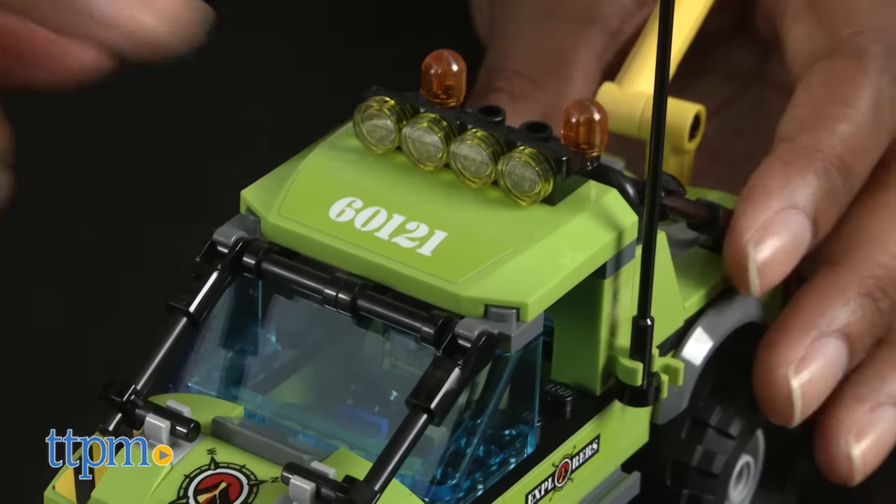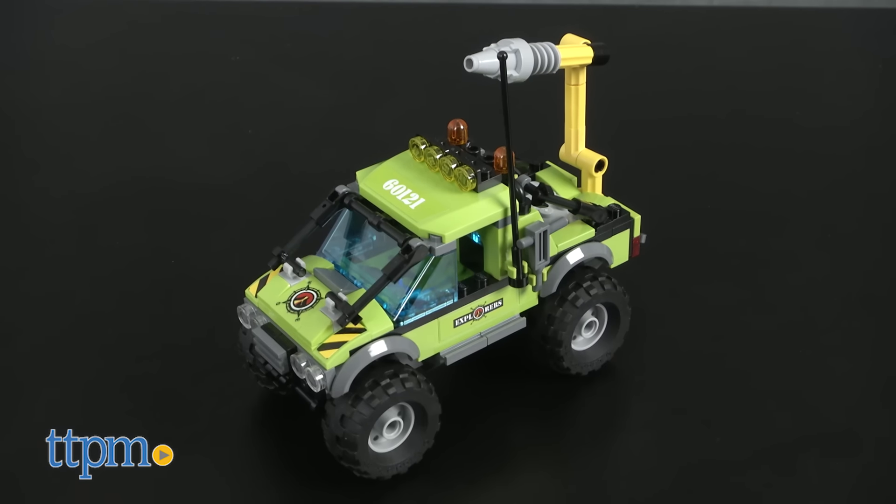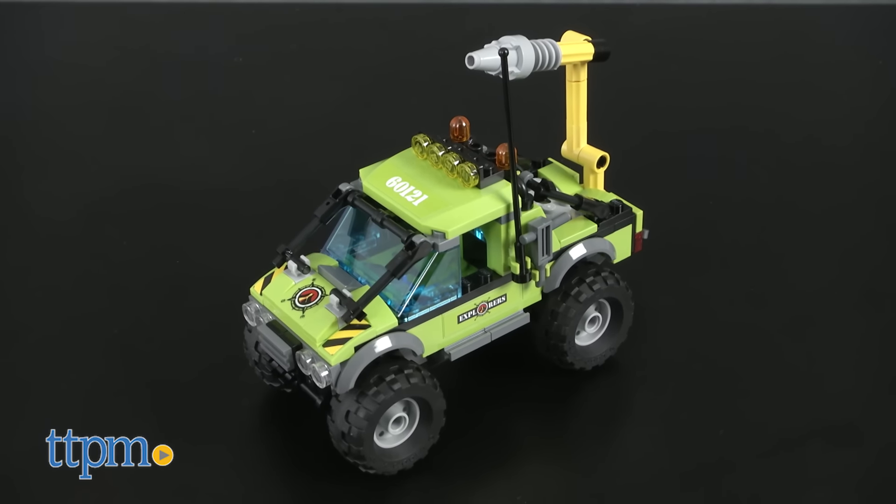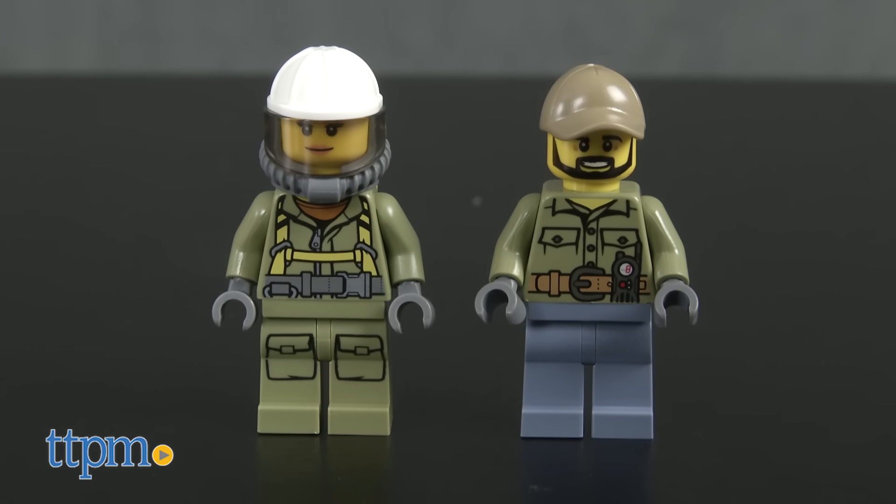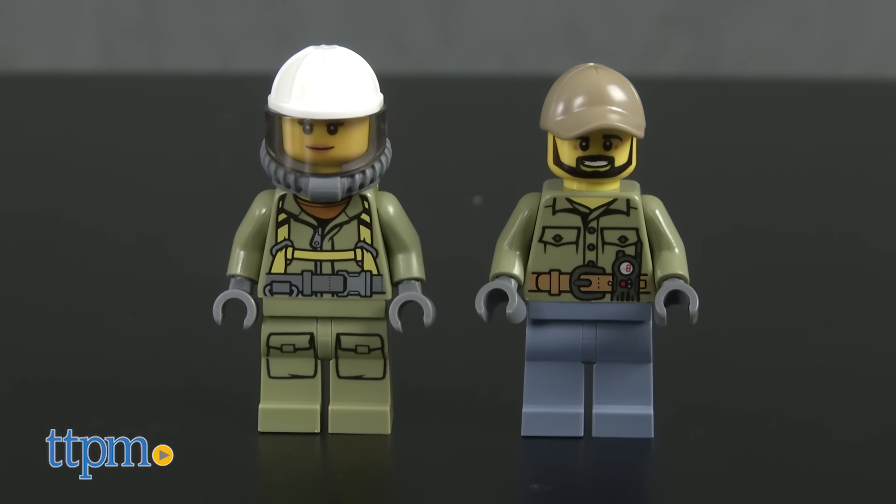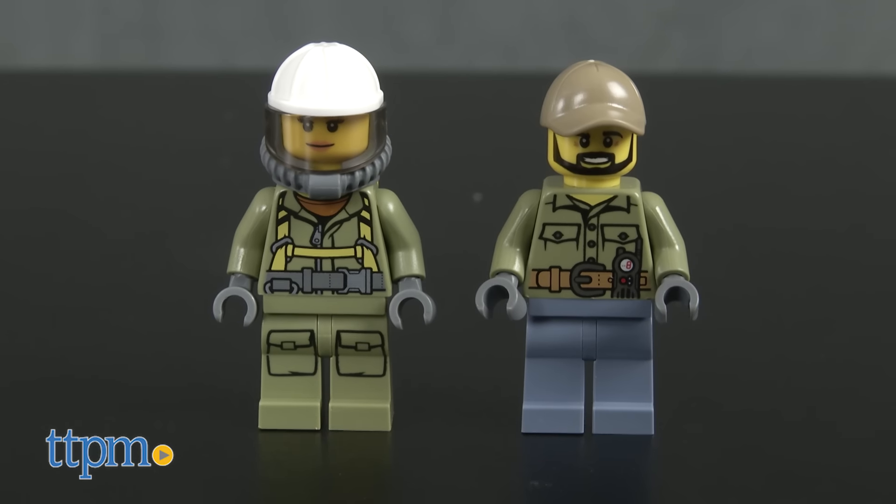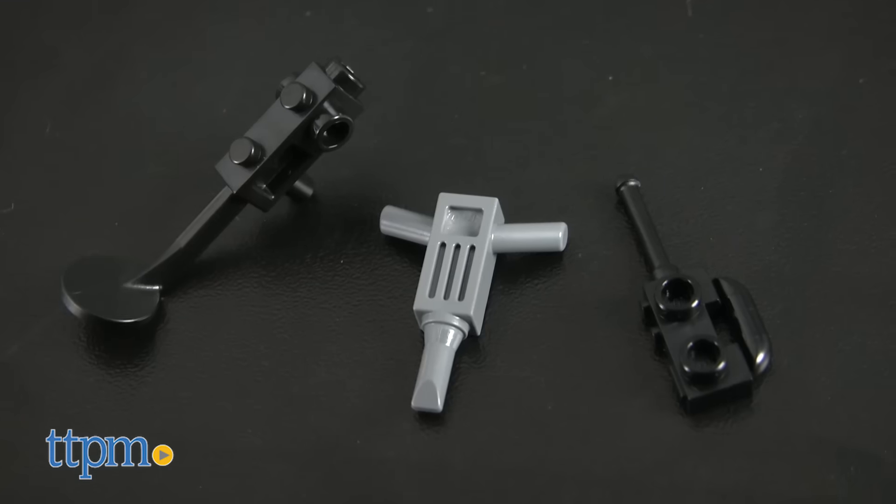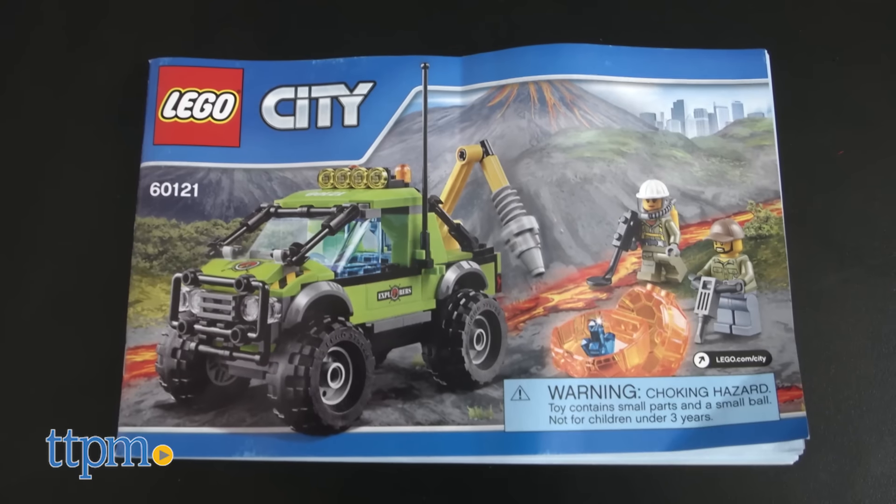This 175-piece set comes with all the pieces needed to build a volcano exploration truck, two minifigures including a female volcano adventurer and a male volcano worker, a boulder, accessories, and instructions.